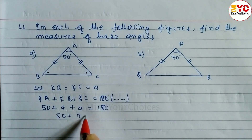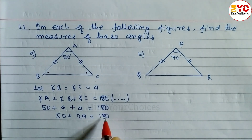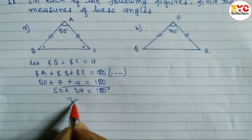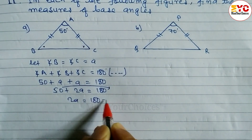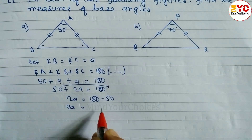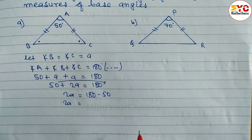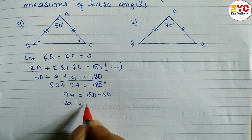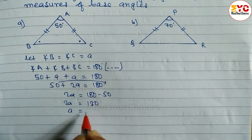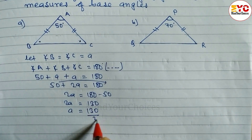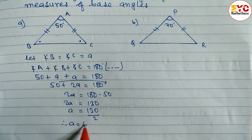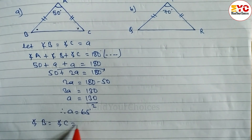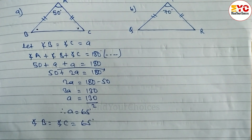50 plus A plus A — we have 2A — is equal to 180. These two are unlike terms, so 50 we have to take to the right side. 2A is equal to 180 minus 50. 2A is equal to 130. This is in multiplication, so we have to divide 130 by 2. Therefore, A is equal to 65. Value of A means angle B is equal to angle C is equal to 65 degrees.